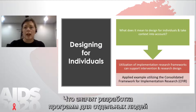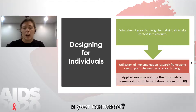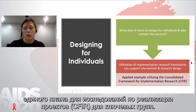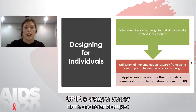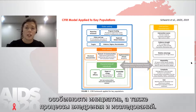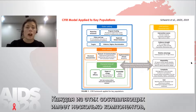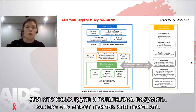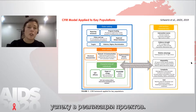So what does it mean to design for individuals and take context into account? I'll give you one example from work that our team has done applying the Consolidated Framework for Implementation Research to key populations. The CFIR broadly has five domains: the outer setting, the inner setting, characteristics of individuals, intervention characteristics, and implementation and research processes. Each of these has multiple constructs within them. We identified the constructs that seemed most relevant for key populations and really tried to think through how those might provide facilitators or barriers to implementation success.